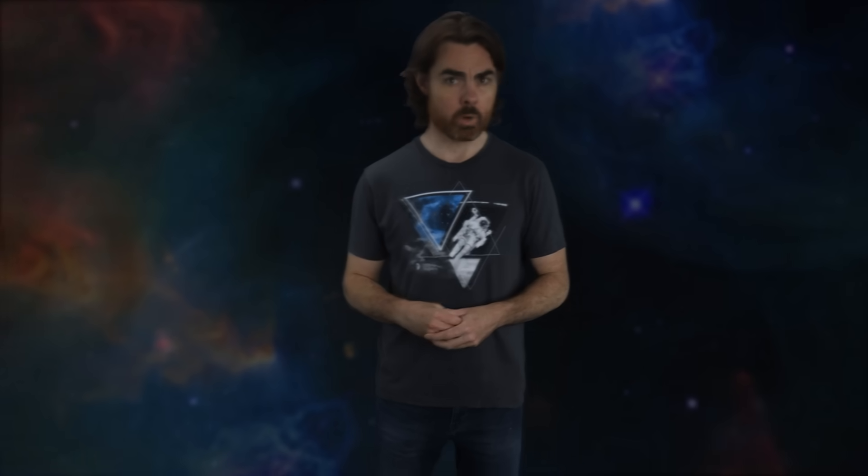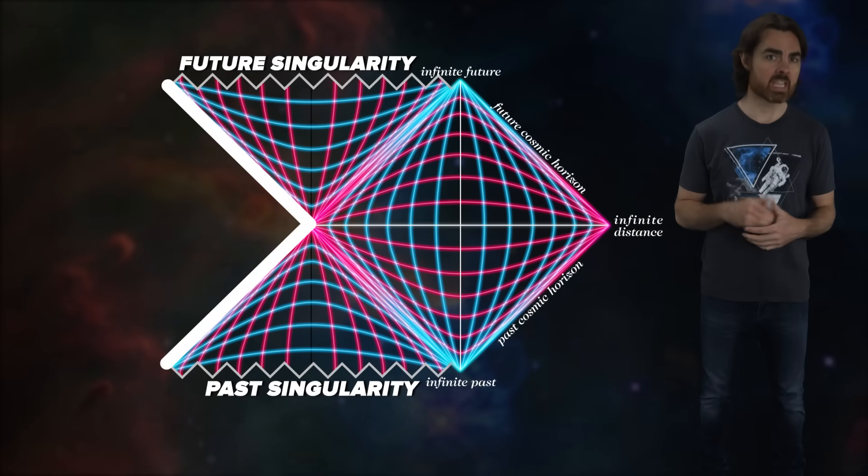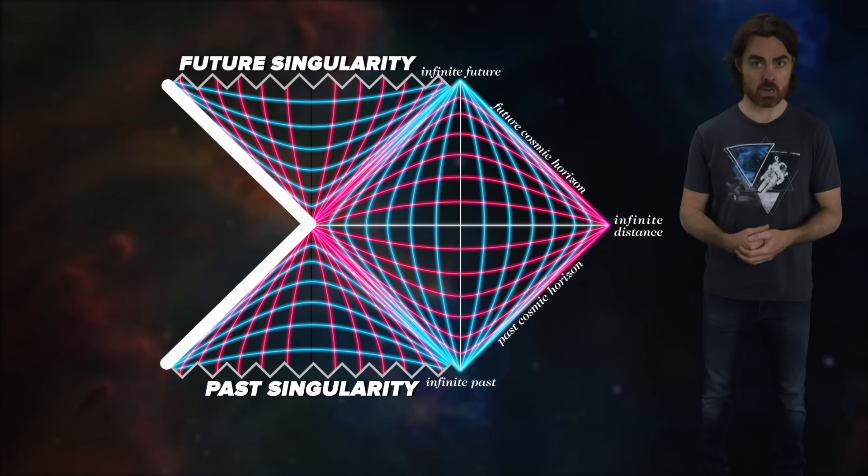But speaking of other universes, it turns out that we haven't finished building our Penrose diagram yet. The past white hole was revealed when we traced the eternal black hole backwards in time. In fact, what we did was to maximally extend space-time. We required that all paths be traceable through infinite past and future space, provided they don't hit the singularity.